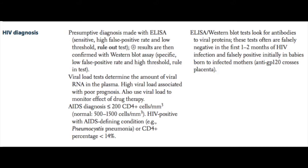As a reminder, ELISA and Western blot tests look for antibodies to viral proteins. These tests are often falsely negative in the first one to two months of HIV infection, and can be falsely positive initially in babies born to infected mothers, because they detect anti-GP120 IgG antibodies that cross the placenta.